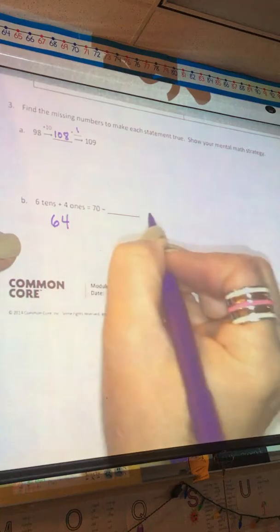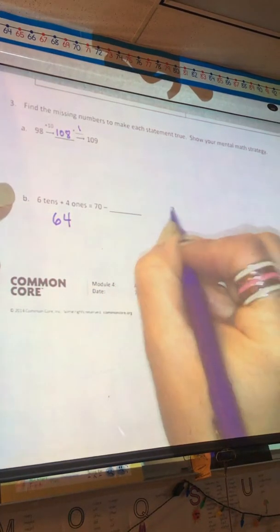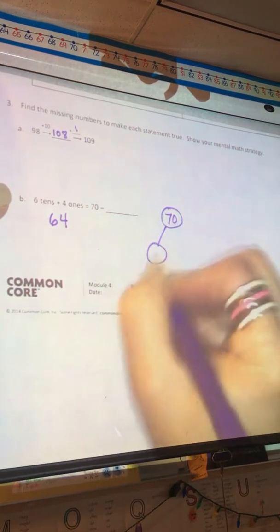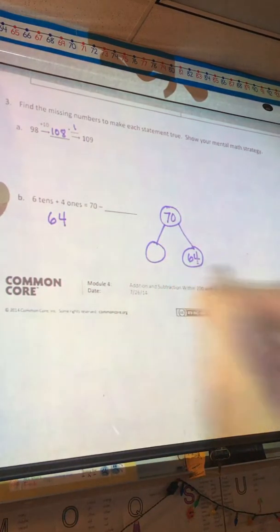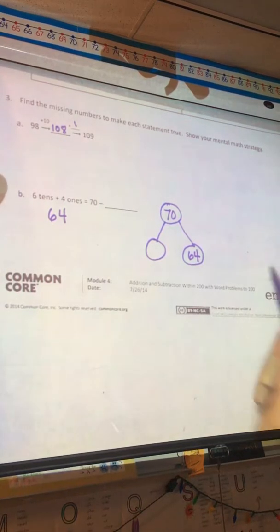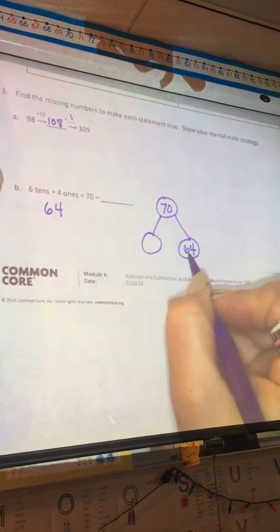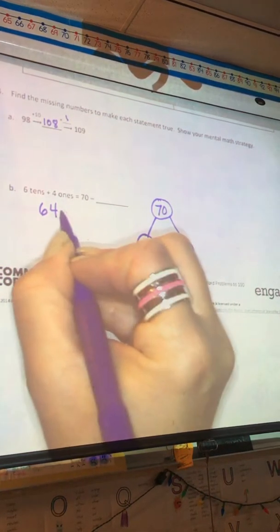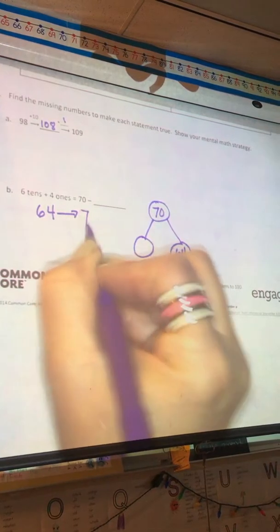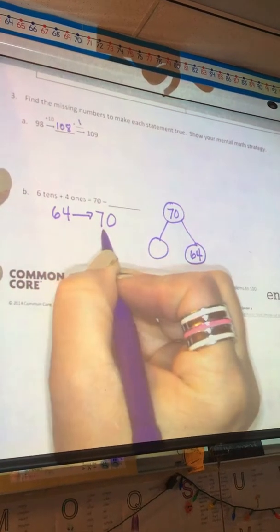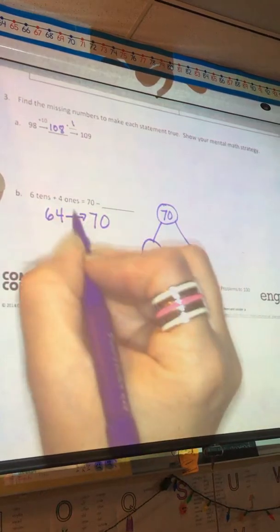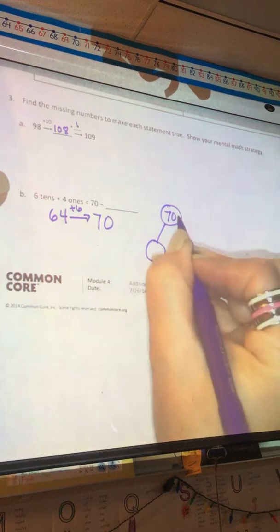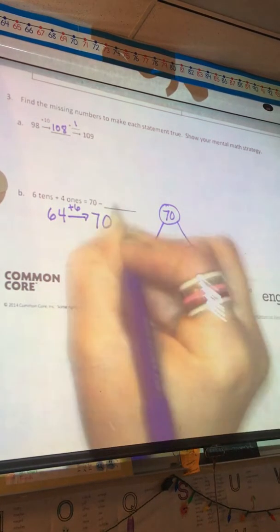So, 70 minus something equals 64. I think I'm going to make a number bond. 70 minus something, I don't know what, equals 64. And I can also read this number bond as an addition problem. 64 plus something equals 70. I know 4 plus 6 is 10, so 64 plus 6 gets me to the next 10, which is 70. So, 70 minus 6 equals 64.